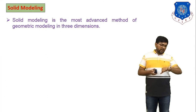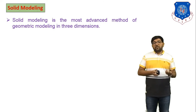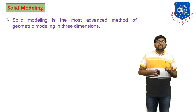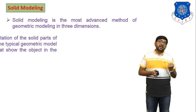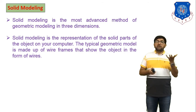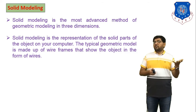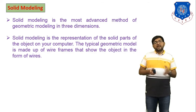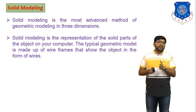Now the last topic: solid modeling. Solid modeling is the most advanced method of geometric modeling in three dimensions — we use solid modeling to create any 3D model. In solid modeling there are many commands like extrude, subtract, revolve, chamfer, fillet — all are features of solid modeling. Solid modeling is the representation of solid parts of an object on the computer.